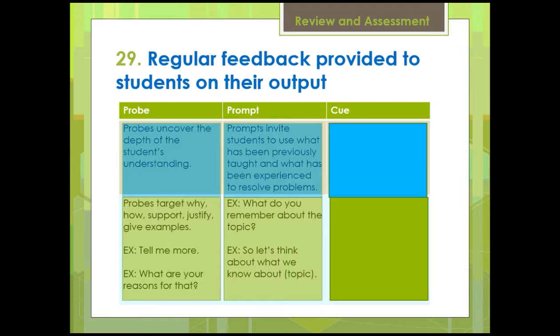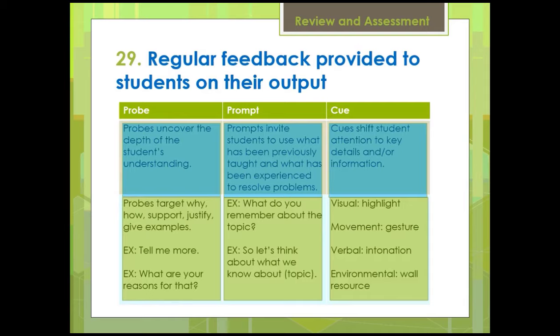Having students pull out old graphic organizers or notes can guide them along correct thinking. And finally, cues — cues shift the student's attention back to the key details and information to get them back where they need to be thinking. They could be visual, such as highlighting something in the text; a movement, such as a gesture by you pointing to a diagram or illustration; verbal, such as your intonation where you raise or lower your voice or stress a certain word; and finally environmental, such as pointing to a wall resource, an example, or a word wall.